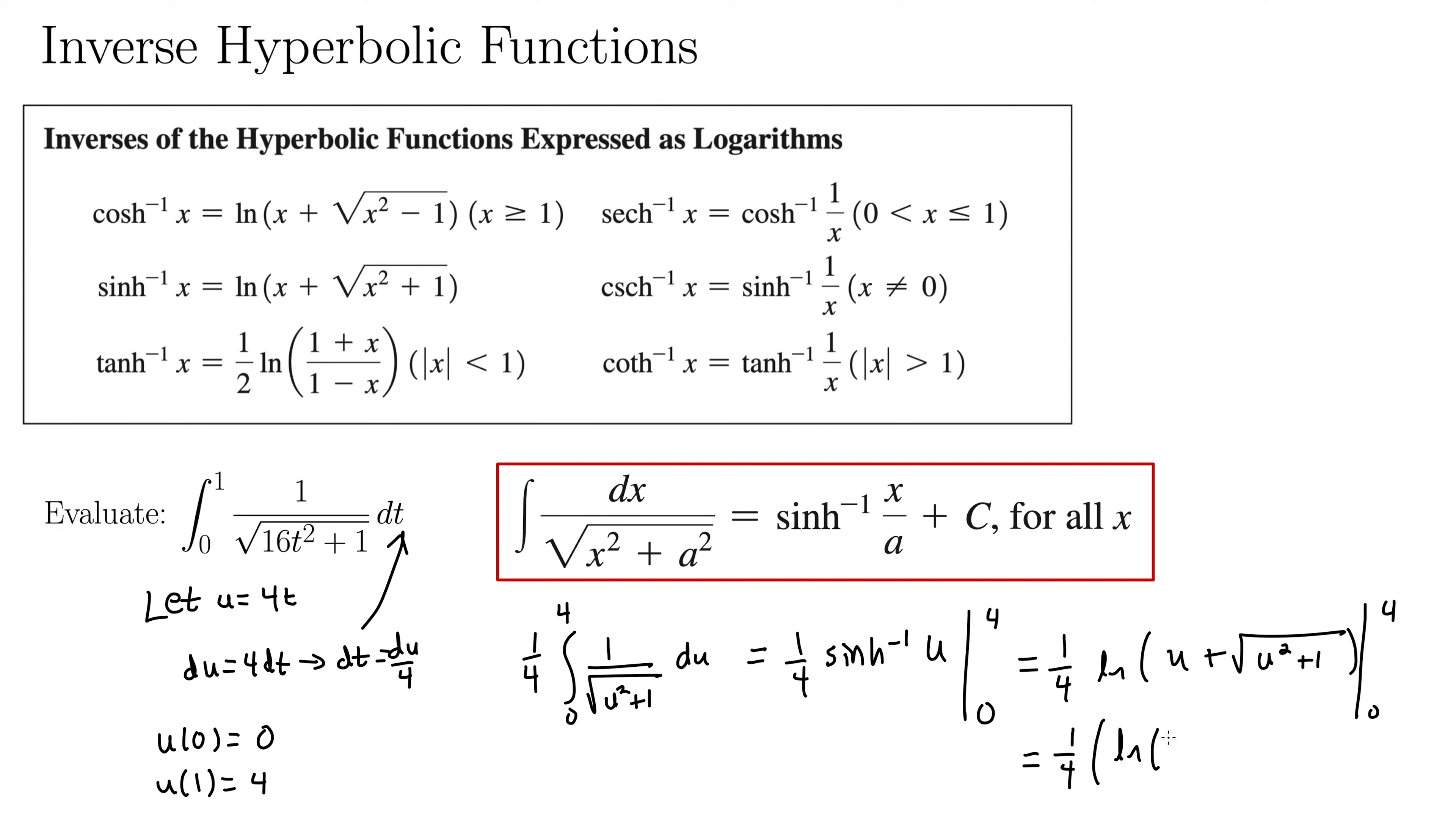Natural log of, so that's 4 plus the square root of 17 minus, if we plug in 0 we get natural log of 1. Well, natural log of 1 is 0. So I'm just going to come up here for the final answer. How about natural log of 4 plus the square root of 17, all over 4.